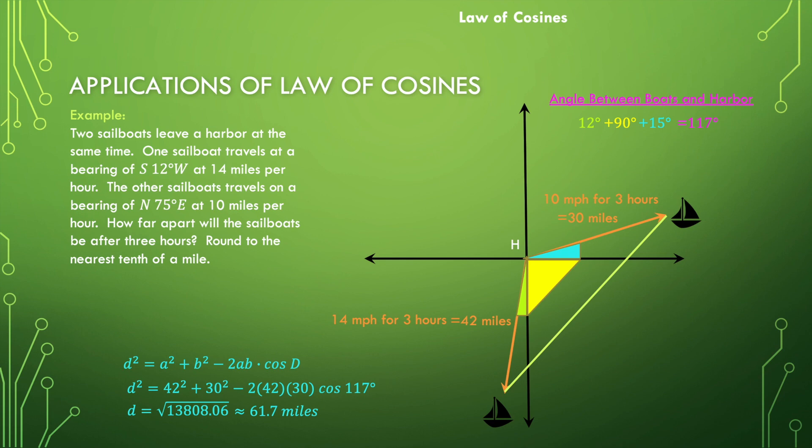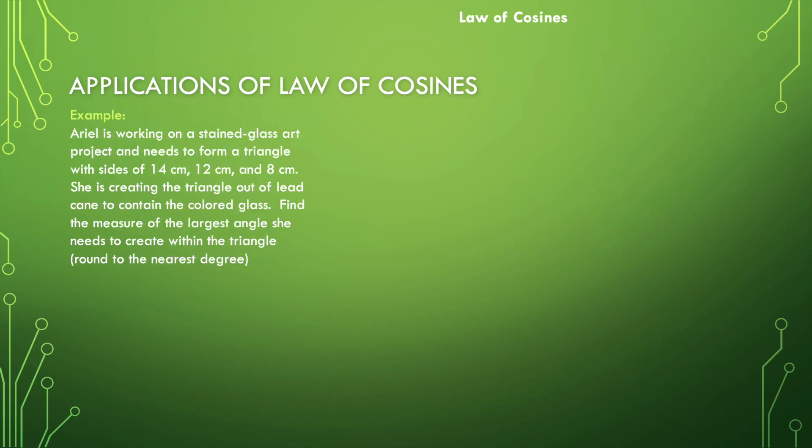This is a different type of problem. Again, we're going to slow down and read the problem. Ariel is working on a stained glass art project, and she needs to form a triangle with sides 14 centimeters, 12 centimeters, and 8 centimeters. She's creating the triangle out of lead cane to contain the colored glass. Find the measure of the largest angle she needs to create within the triangle and round to the nearest degree.